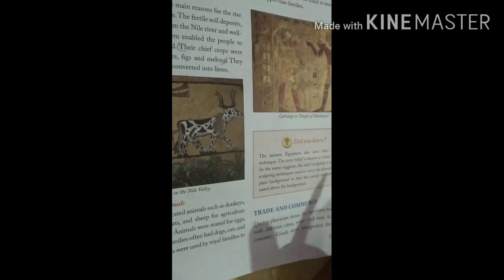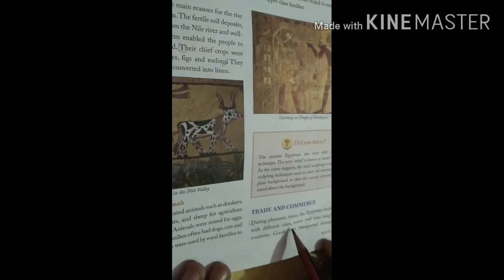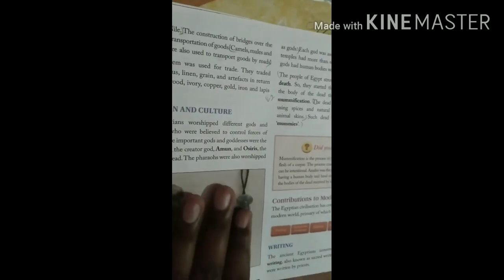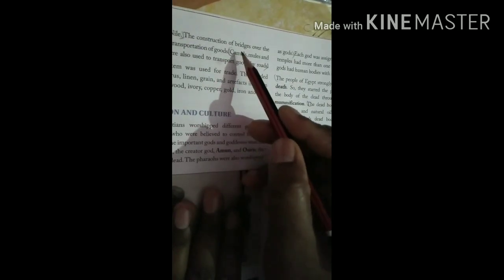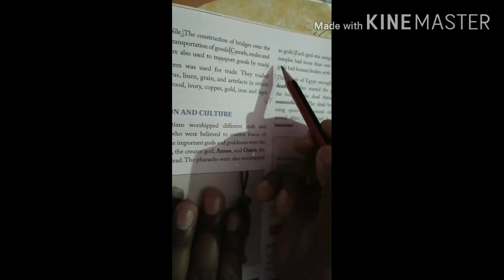Now come to the next, question number third: Write short notes on the following aspects of the Egyptian Civilization: Trade and Commerce, and Art and Crafts. First you have to write Trade and Commerce, this is on page number fifteen. From times, the Egyptians traded goods with different cities, towns, even neighboring countries. Goods were transported through boats along the Nile. Camels, mules, and donkeys were also used to transport goods by routes.